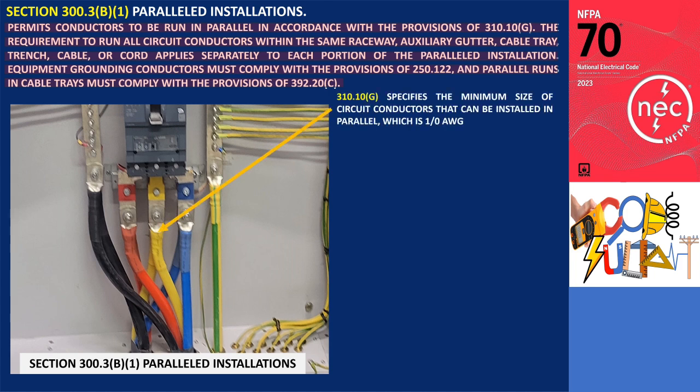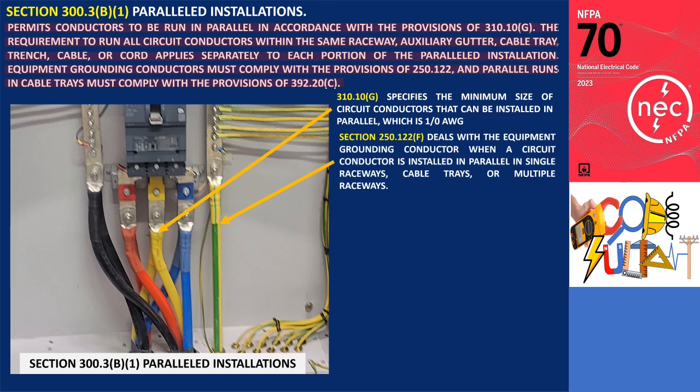Section 310.10 specifies the minimum size of circuit conductors that can be installed in parallel, which is 1-0 AWG. Section 250.122.f deals with the equipment grounding conductor when a circuit conductor is installed in parallel in single raceways, cable trays, or multiple raceways.